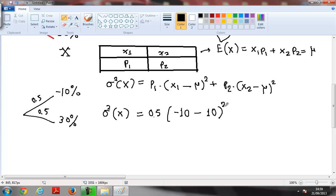That goes squared minus 10 minus 10 squared, plus p2 that's 0.5 times x2, that's the second number that appears, so that's 30 percent, minus mu, mu is the expected rate of return I found before, squared.